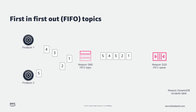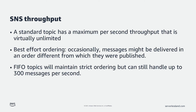A second helpful feature is the first-in-first-out, or FIFO, topic type. These topics ensure that the subscribers get events in the exact order they were generated, and can also integrate with FIFO SQS queues to maintain order throughout both. A standard topic has a maximum per-second throughput that is virtually unlimited, providing best-effort ordering — though occasionally messages might be delivered in a different order from which they were published. FIFO topics maintain strict ordering but can still handle up to 300 messages per second.